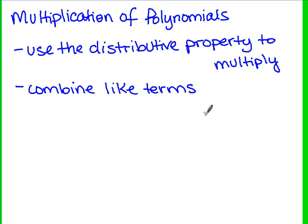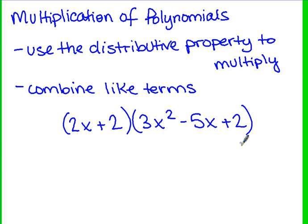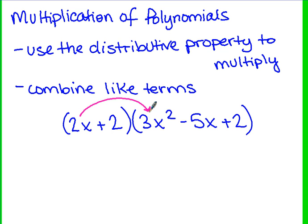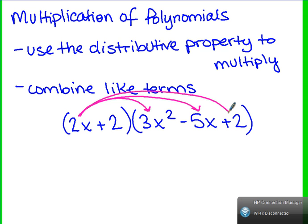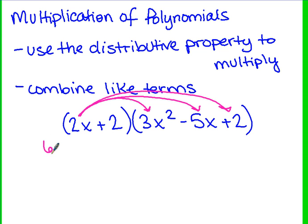Let's look at an example: we have (2x + 2) times (3x² - 5x + 2). We use the distributive property, going from the first term in the first polynomial to every term in the second. So 2x times 3x² — multiply coefficient times coefficient: 2 times 3 is 6, and x times x² gives x³, so we have 6x³. Then 2x times -5x gives -10x², and 2x times 2 gives +4x.